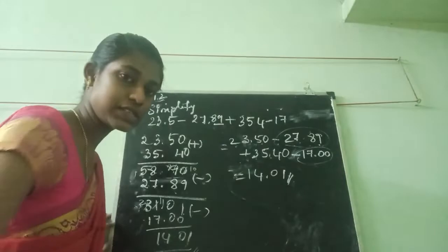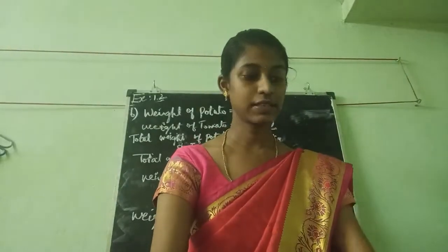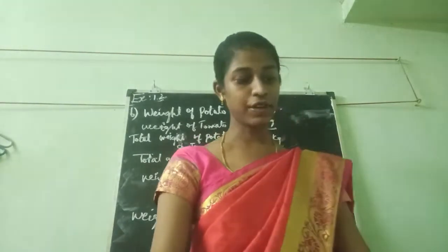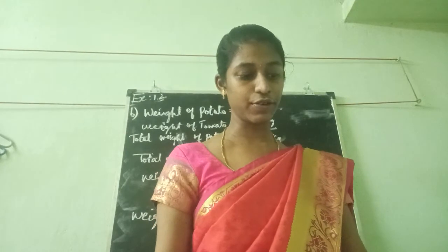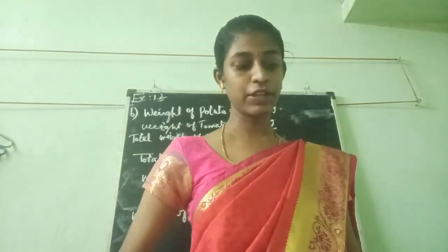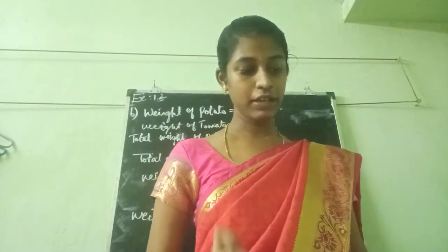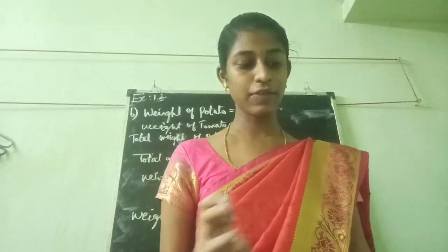Next we are going to see about the 6th sum. I am reading the question: A man bought 3.50 kg of potato, 2.50 kg of tomato, and some onion. If the weight of the total items is 10.50 kg, then find the weight of the onion.